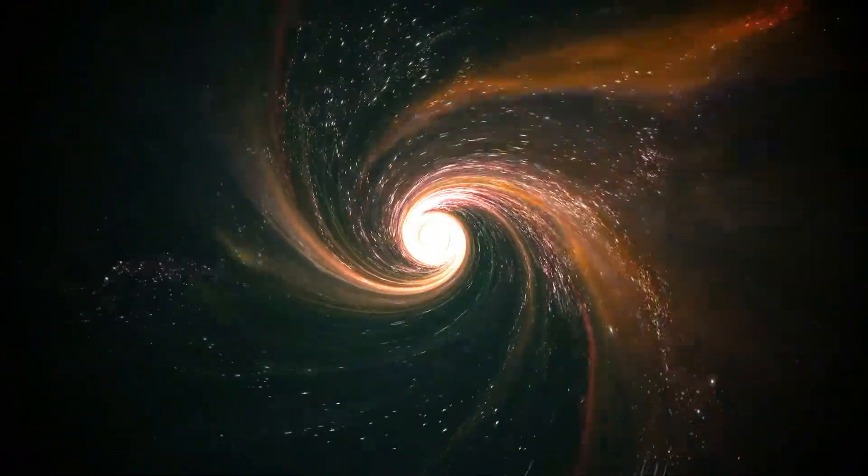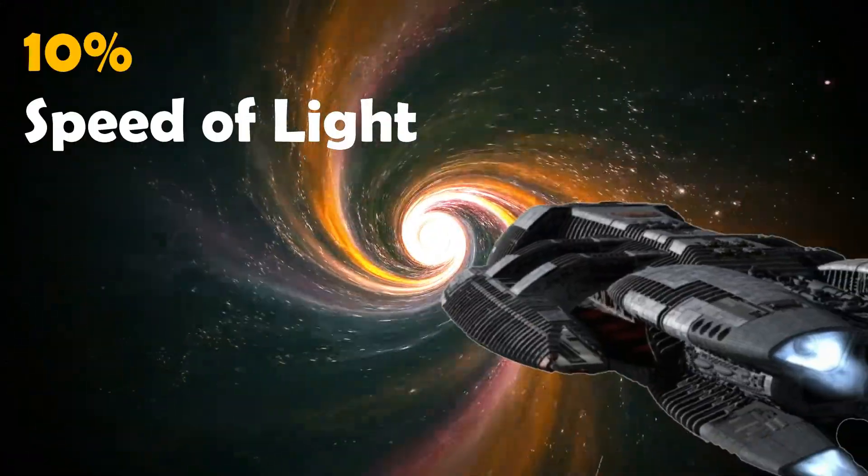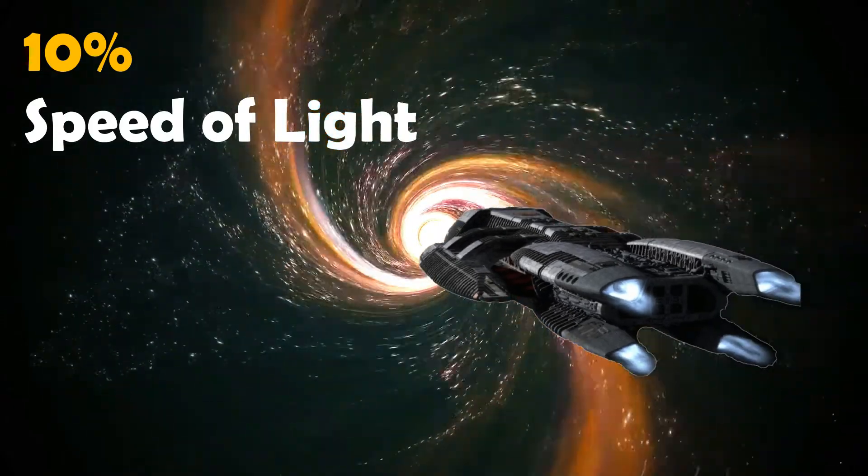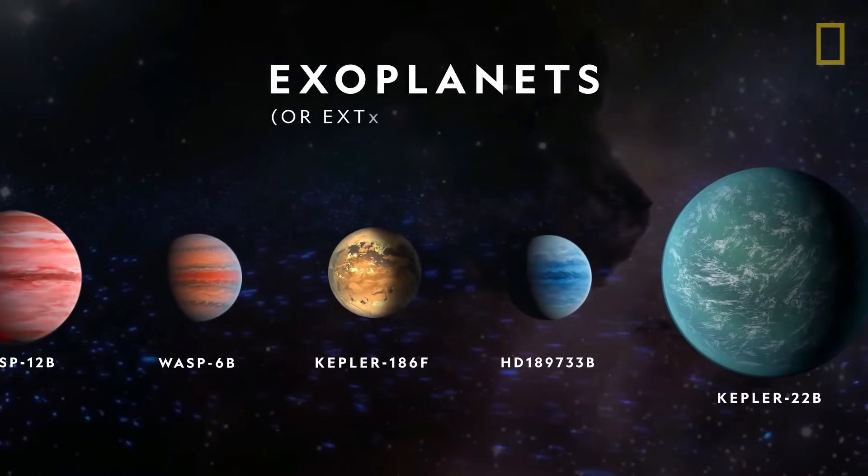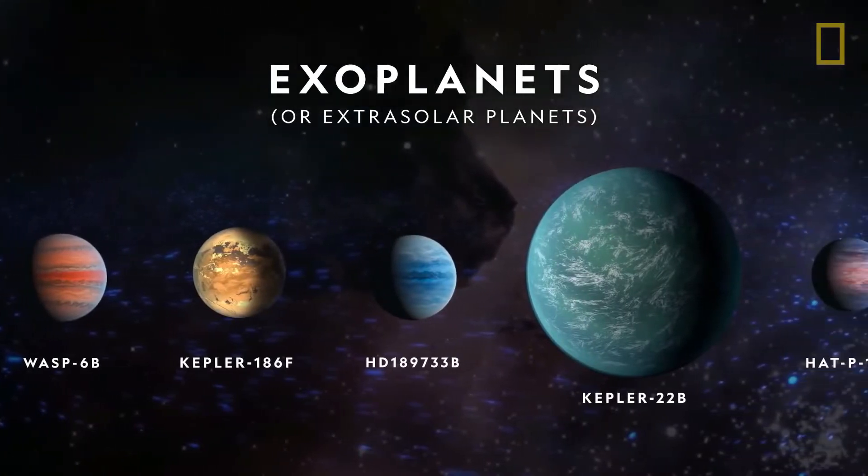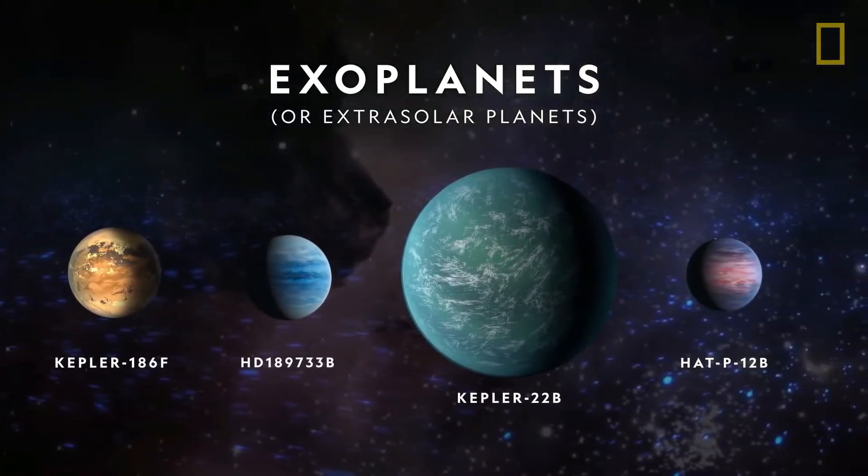We need a spaceship which can travel at minimum 10% speed of light to reach Alpha Centauri in our lifetime. Astronomers have identified nearly 4,000 planetary candidates, out of which 1,100 are confirmed that can sustain life.